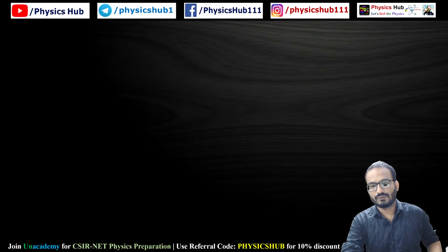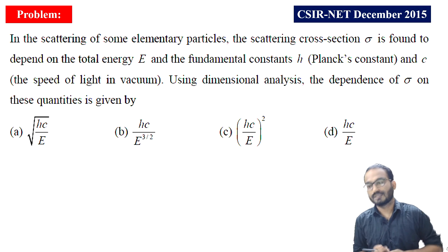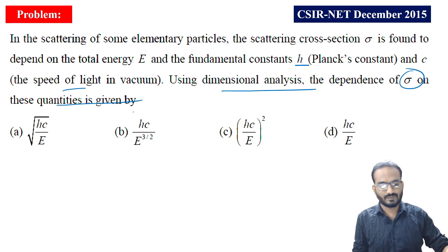Now let's move forward to another question. This question came in CSIR NET December 2015. In the scattering of some elementary particles, the scattering cross section sigma is found to depend on the total energy E and the fundamental constants h (Planck's constant) and c (the speed of light). Using dimensional analysis, the dependence of sigma on these quantities is given by... So how are we going to do this?